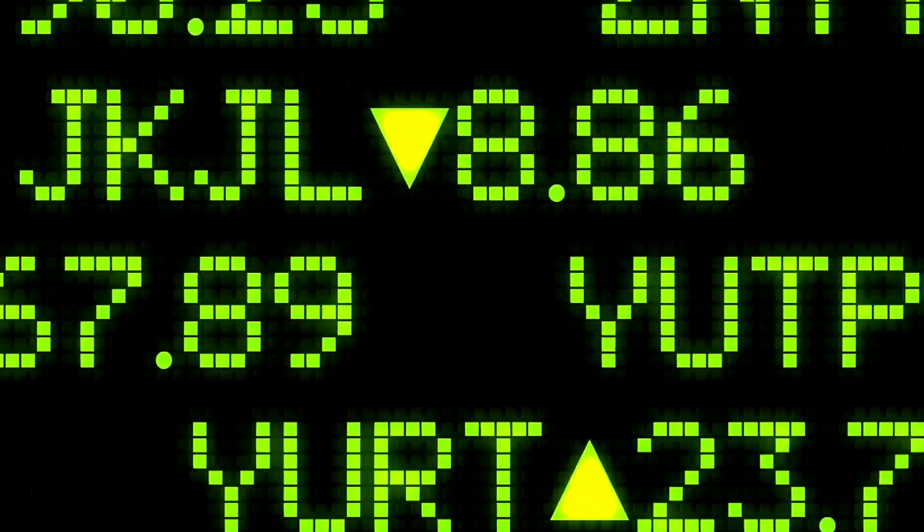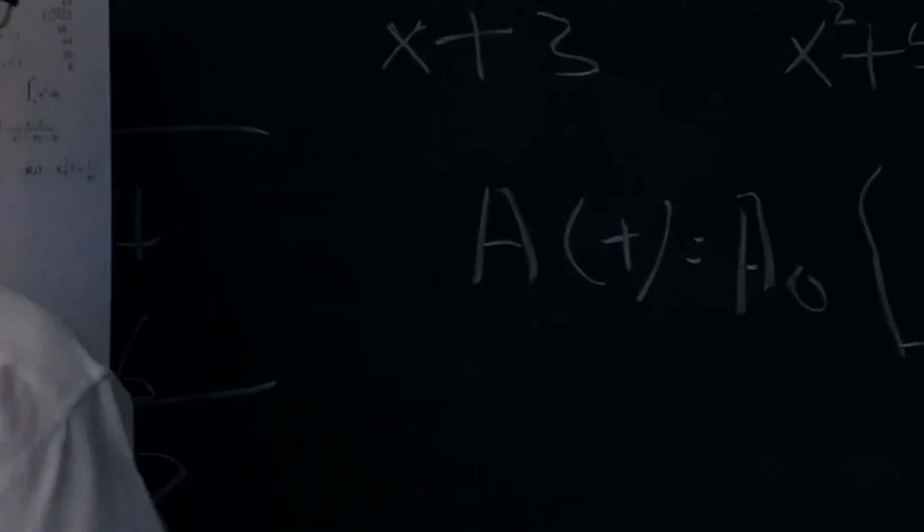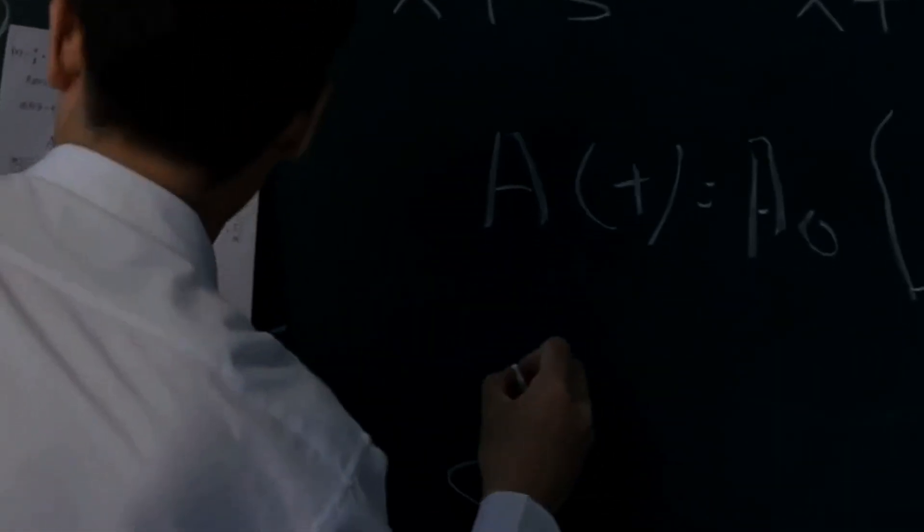First, we jump into the one Millennium Prize problem that has been solved, the Poincaré conjecture. In the field of geometric topology, a two-dimensional sphere is characterized by the fact that it is the only closed and simply connected two-dimensional surface. But what about three-dimensional shapes?